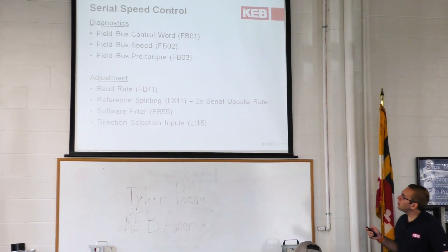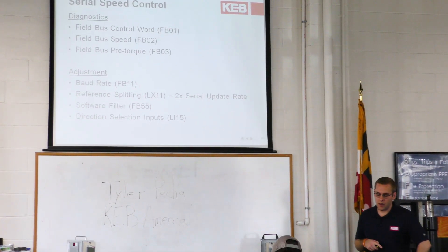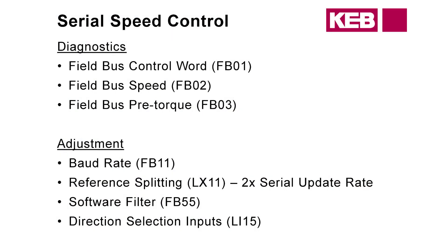So we've got the control word coming over — FB-01 will tell you what the control word from the controller is doing. Field bus speed is FB-02, that raw value. Field bus pre-torque is in a percentage. For ride quality adjustments, we have two parameters: reference splitting and the software filter. The baud rate is the communication rate between the controller and the drive, and it needs to be set the same on both. Then there's the direction selection inputs, which dictate what kind of hardware direction inputs from the controller the drive is looking for.